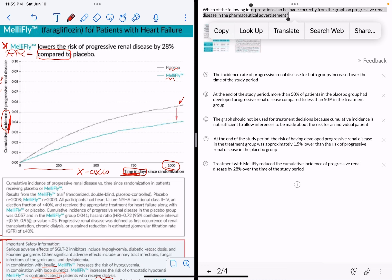It showed us that overall over 1,000 days with both drugs regardless, there is an increase in the cumulative incidence of progressive renal disease. So patients were already going to get progressive renal disease. The difference is in rates. With MelliFly we have less patients reporting progressive renal disease versus placebo, but in both cases over time we saw increased progressive renal disease.